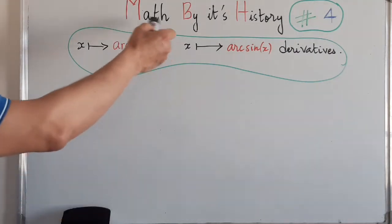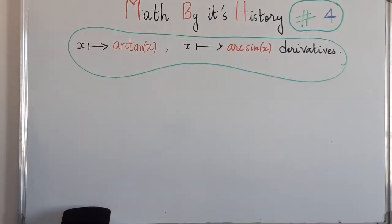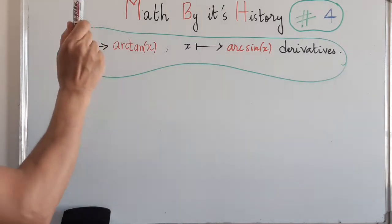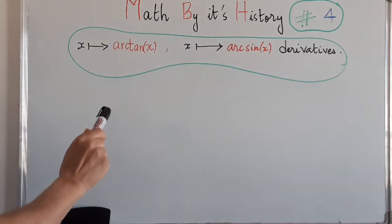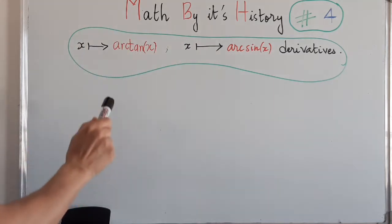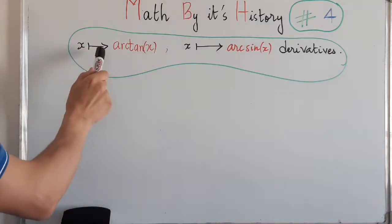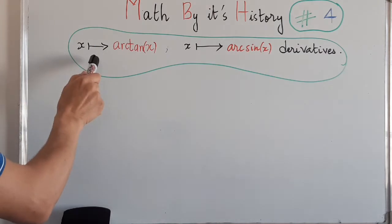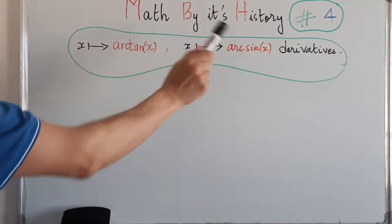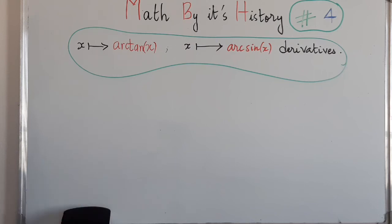Welcome everybody to this series 'Mapped by Its History.' In this fourth episode, we will talk about a geometrical way, following Newton and Leibniz, to find the derivative of functions such as arctangent and arcsine — the reciprocal functions of tangent and sine.